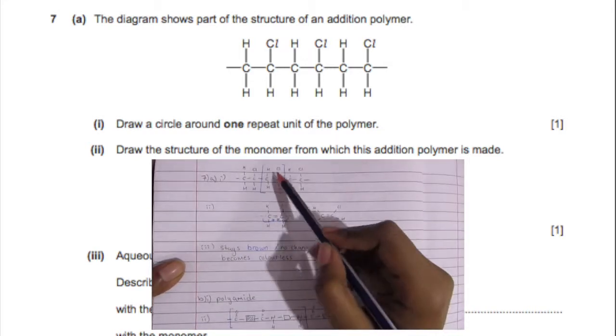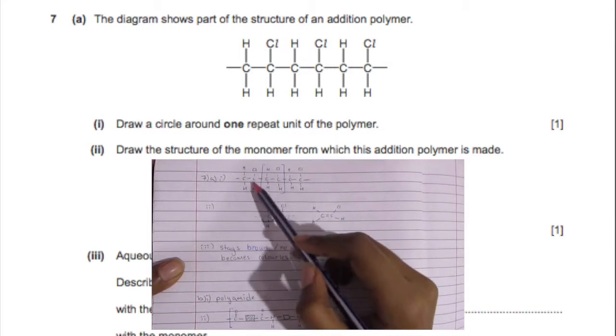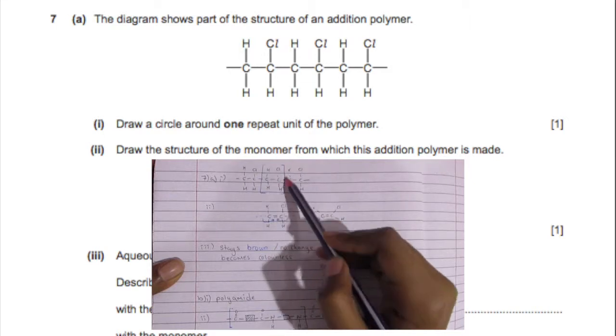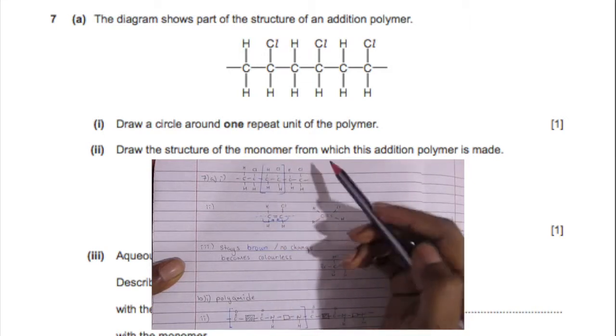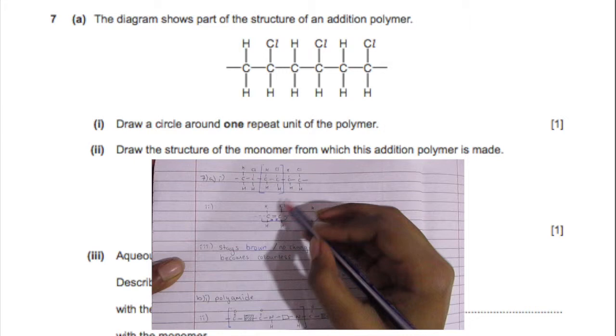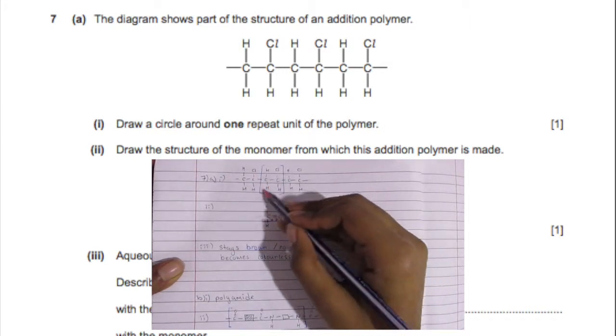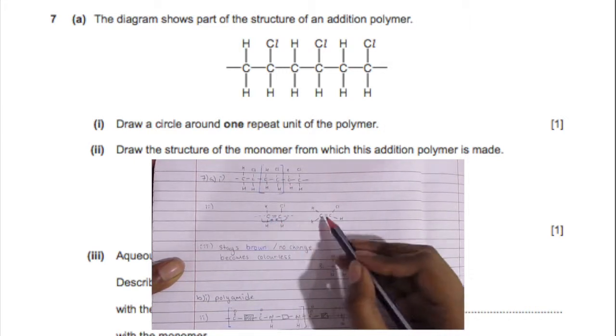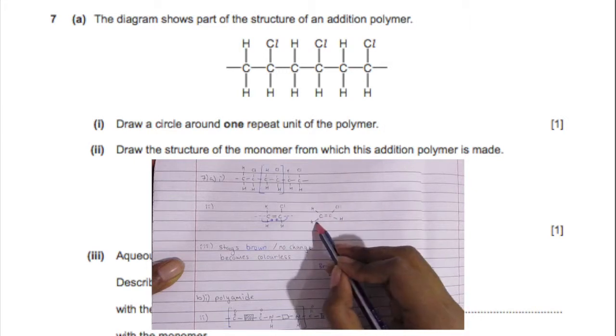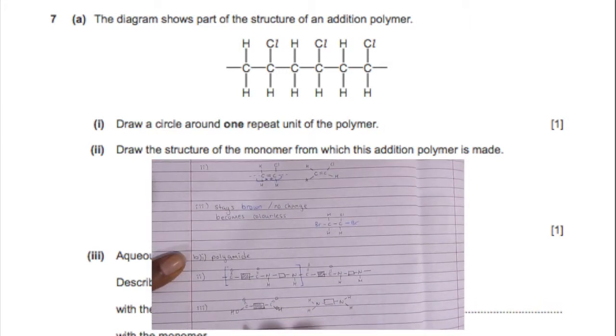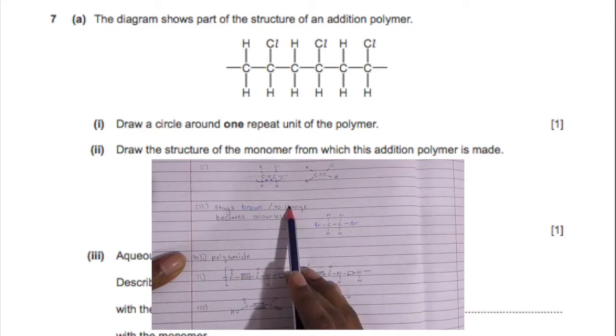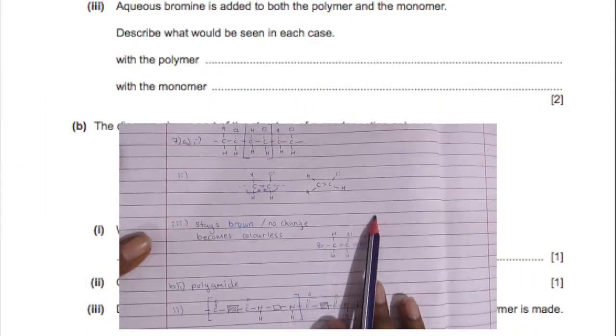Now the repeat unit is obviously going to be the carbon with two hydrogens and carbon with one hydrogen and chlorine, and it's just constantly repeated. Now the monomer, you're going to close in those single bonds forming the double bond and you end up with this molecule.